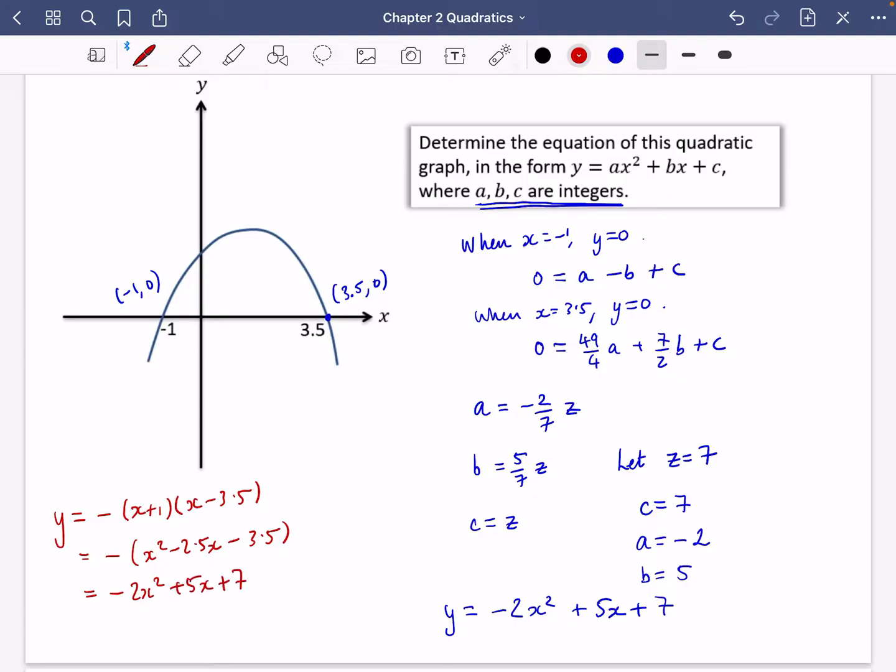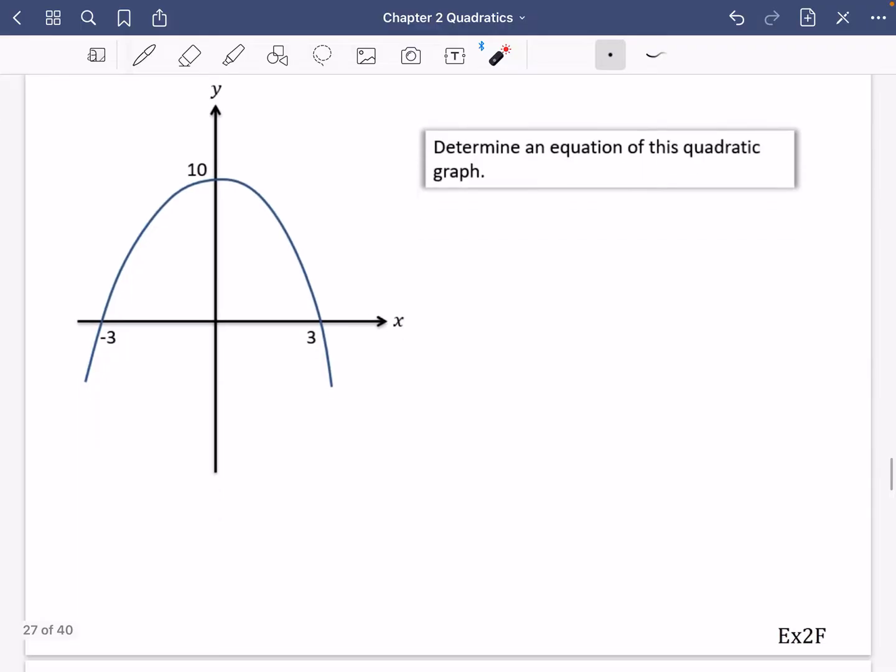I kind of think if we can use this method a bit more, it will be more useful in the future. So we're going to try one more and we're going to use the first method I did. So we've got three coordinates. That is 3, 0, then 0, 10 and minus 3, 0. And we know it's y equals ax squared plus bx plus c. So I'm going to start off by doing the 0, 10. When x equals 0, y equals 10. So 10 equals c.